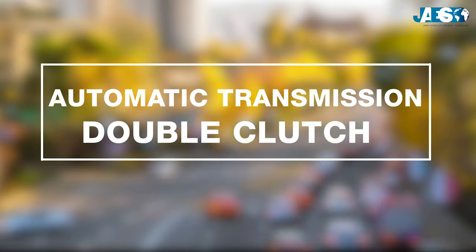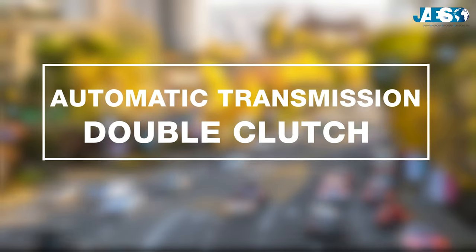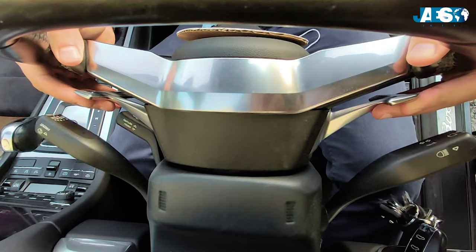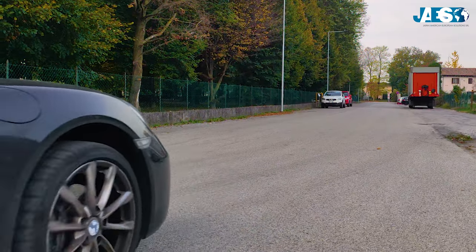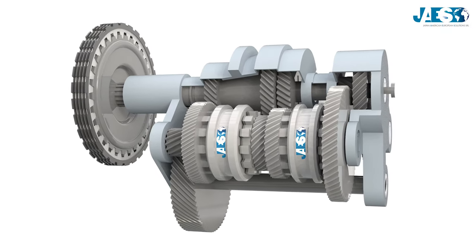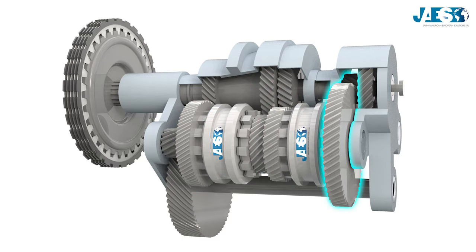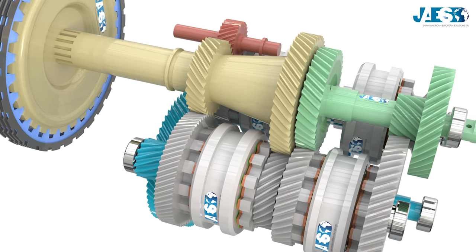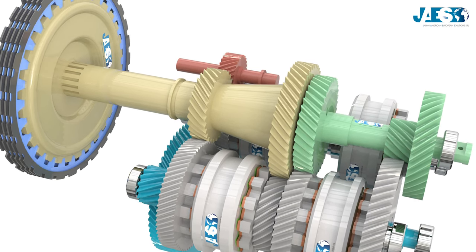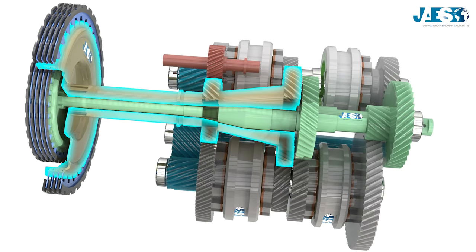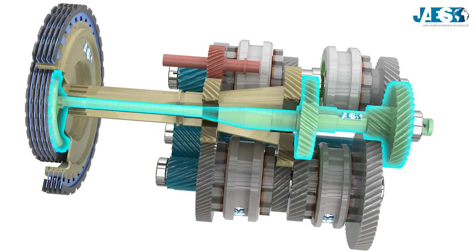The dual clutch transmission is another type of automatic gearbox. It is common among sports cars and is extremely fast, eliminating the loss of power between one gear and another. The only disadvantage is its higher cost. As with the manual gearbox, there are pairs of gears always meshed with each other, with the free gear of each pair equipped with a synchronizer. The gears are mounted on two different coaxial shafts — one for the even gears and one for the odd gears — connected to two different clutches.